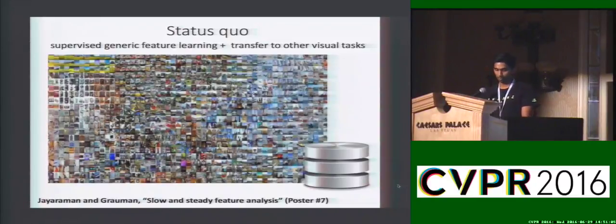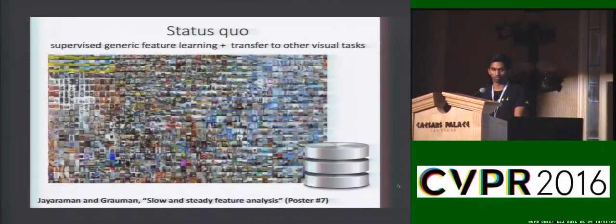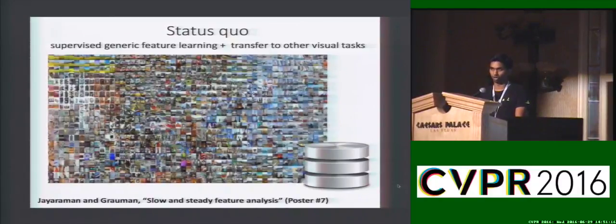But we know both intuitively and on the basis of biological evidence that visual learning is not restricted only to sets of category-labeled exemplars. In particular, take children, for instance, who learn long before they can process any semantic labels, just by constantly observing the world around them.